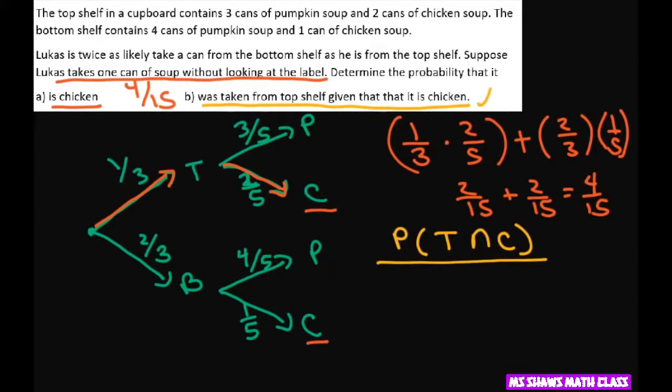this is a conditional probability, we divide by the probability it's chicken, which we already did. So the denominator here is four divided by fifteen. And then the top shelf and the chicken